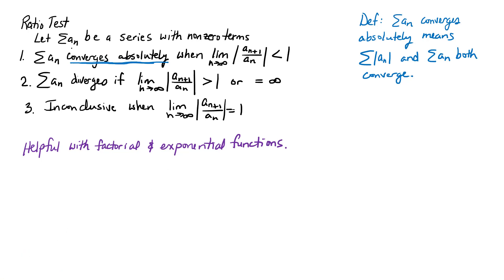We're going to let a sub n — the sum of the a sub n's — be a series with nonzero terms. We can say that the series will converge absolutely when the limit as n approaches infinity of the ratio of the terms a sub n+1 over a sub n in absolute value is less than 1. It diverges if that limit is greater than 1 or equal to infinity, and the test is inconclusive when the limit equals 1.